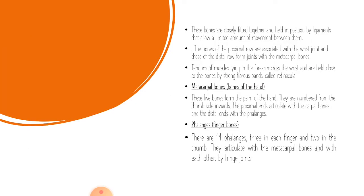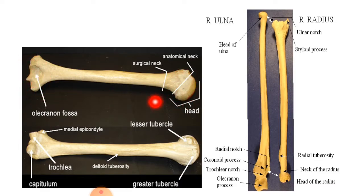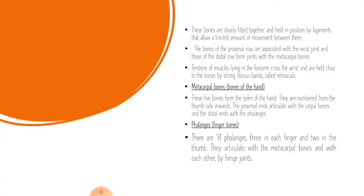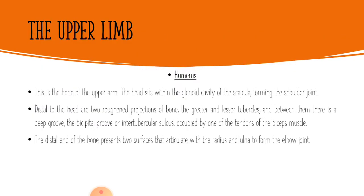Now we will discuss the bones of the upper limb. The first bone is the humerus. The humerus has a proximal end, and at its proximal end it has a head. This head takes part in the formation of the shoulder joint with the glenoid fossa. The head is much bigger than the glenoid fossa.